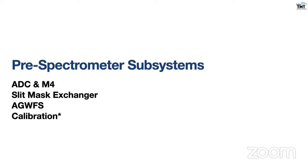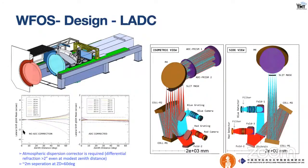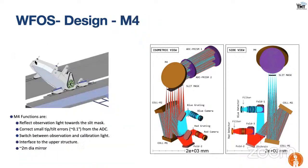The pre-spectrometer subsystems include the ADC, M4, slit mask exchanger, guiding and wavefront sensing, and calibration. The ADC corrects atmospheric refraction greater than 2 arcseconds even at modest resolution. This pair of prisms moves linearly and also rotates to correct for field rotation. The M4 system directs light vertically downwards, and will also collect light from the calibration system by rotating 90 degrees in the horizontal axis. It also corrects for small pupil shift errors of about 0.1 degrees created by the ADC. The M4 mirror is already two meters in diameter.